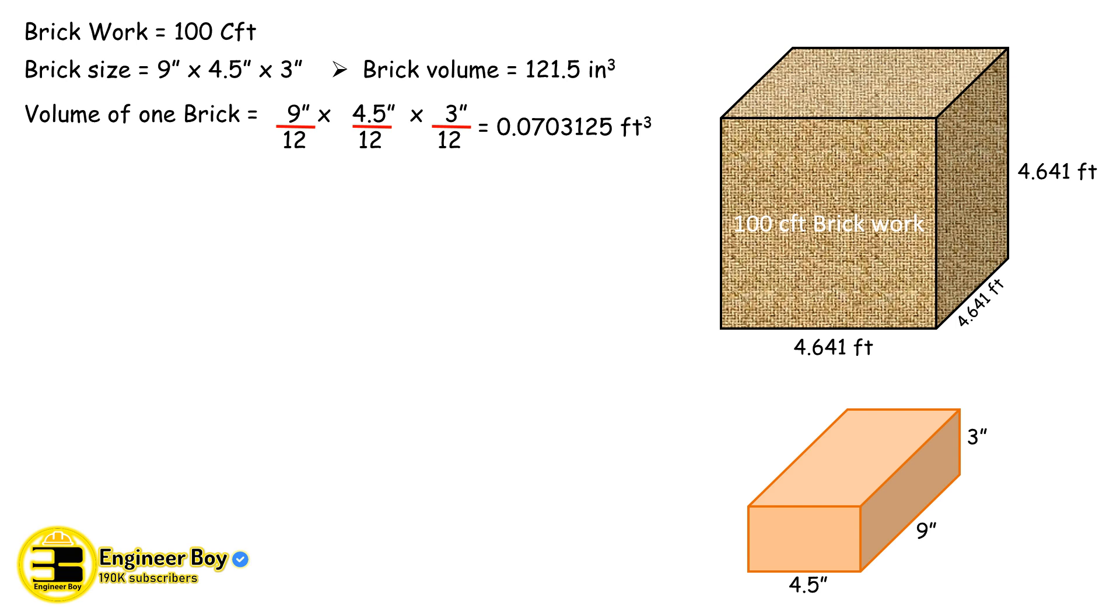That's so simple. Now let's assume that there is 10 percent cement mortar in the brick work, so we can calculate the net brick work without the mortar. The net brick work can be 100 cft, which is the total brick work, and we will subtract 10 percent of it.